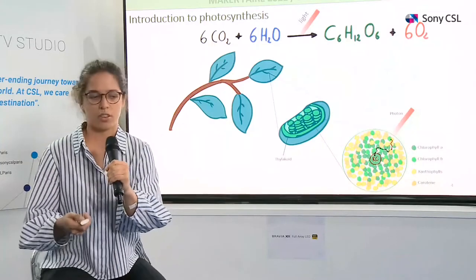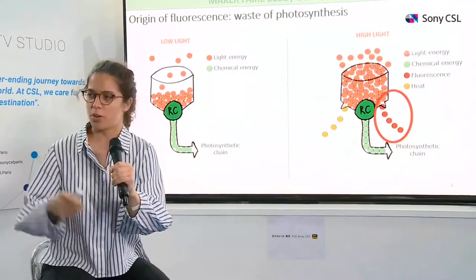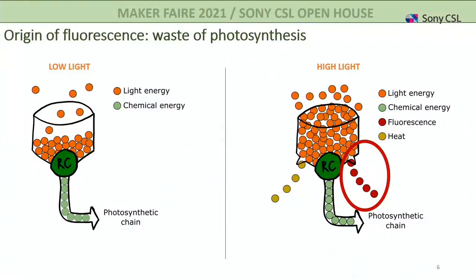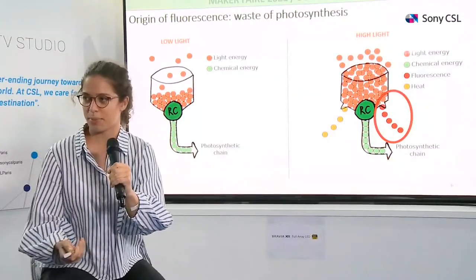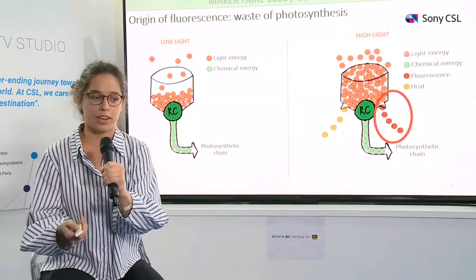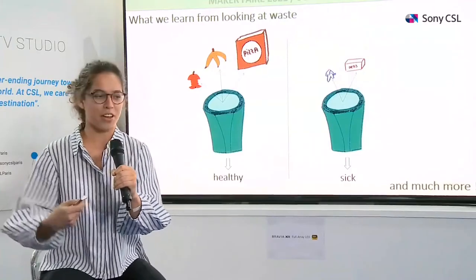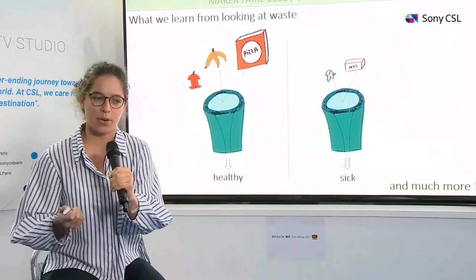However, the antenna pigments cannot control how much energy they receive. In the morning with limited sunlight, they capture energy matching photosynthesis capacity, but at noon with full sunlight they receive too much energy. To avoid damage, they release this excess energy through two processes: heat or fluorescence. This is really interesting because we can measure the fluorescence light — essentially looking at the waste of photosynthesis.